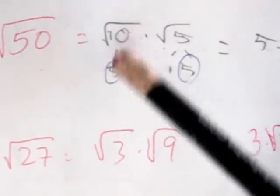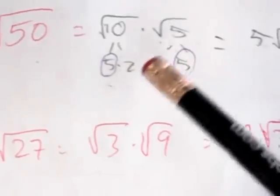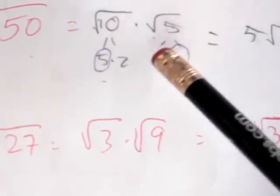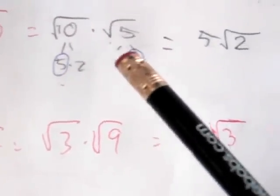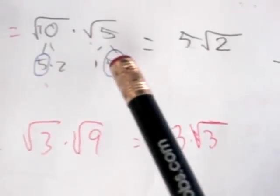Now, I took factors from 10 and 5. Factors from 10 would be 5 and 2, because 5 times 2 is 10. Factors from 5 would be 1 and 5, because 5 times 1 is 5. Now, as I see, I see two 5s. I see 5 and 5.